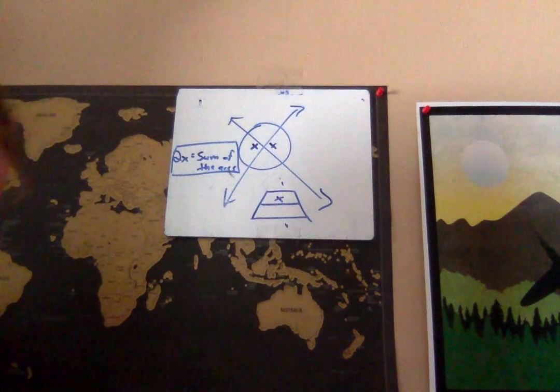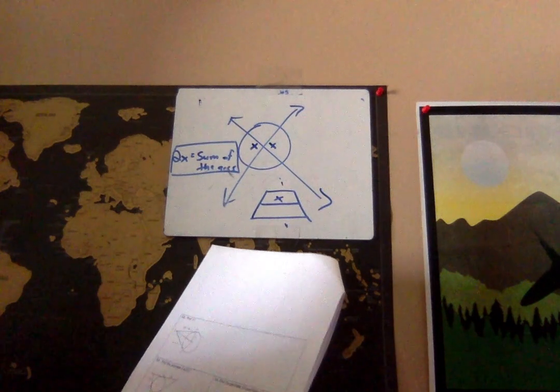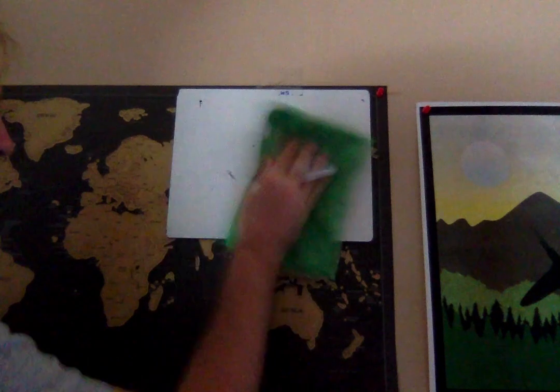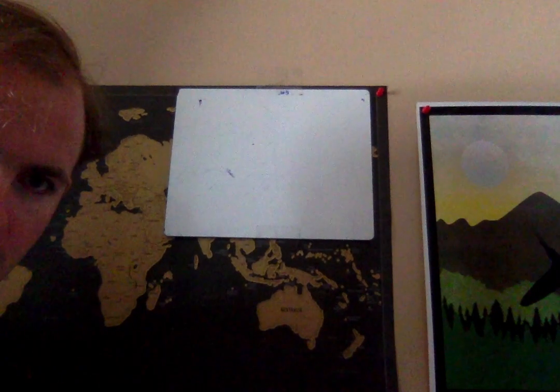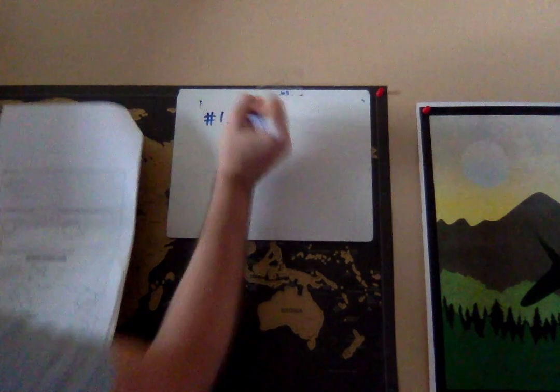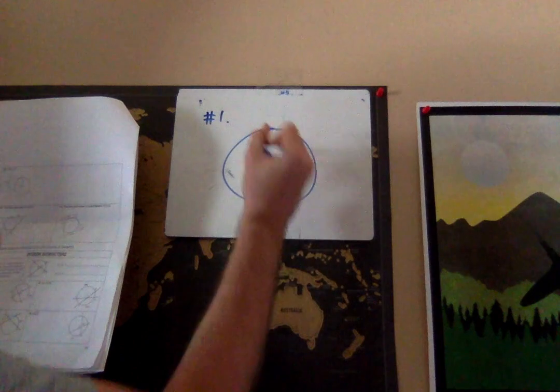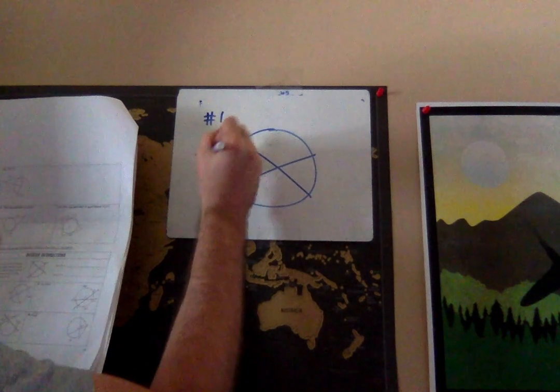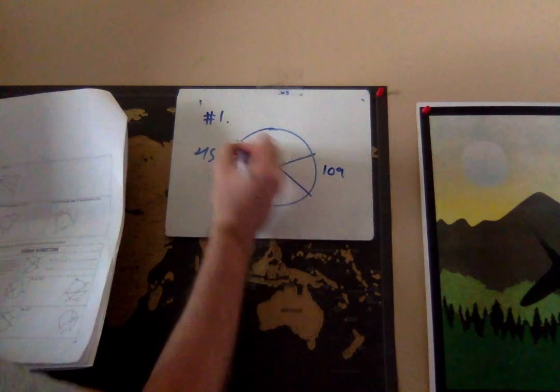To see how this is going to work, let's start with a relatively easy example, which is number one. We're on page 14, number one. Here's my circle—there's 45, there's 109, and they're asking for angle AED, which is right here.